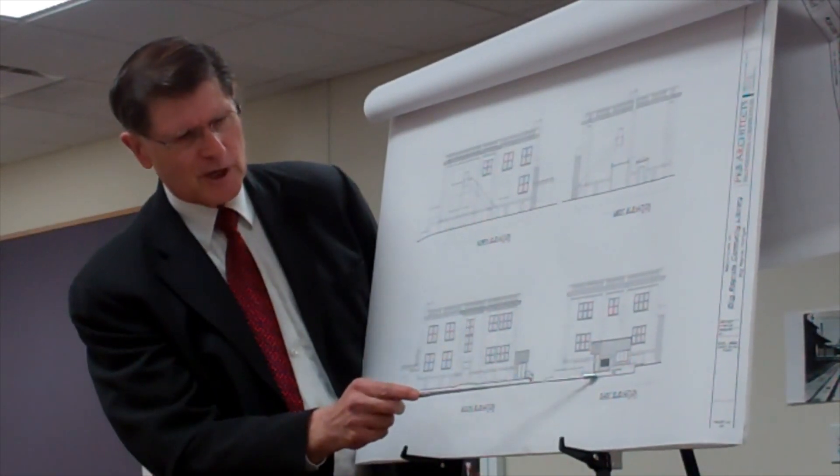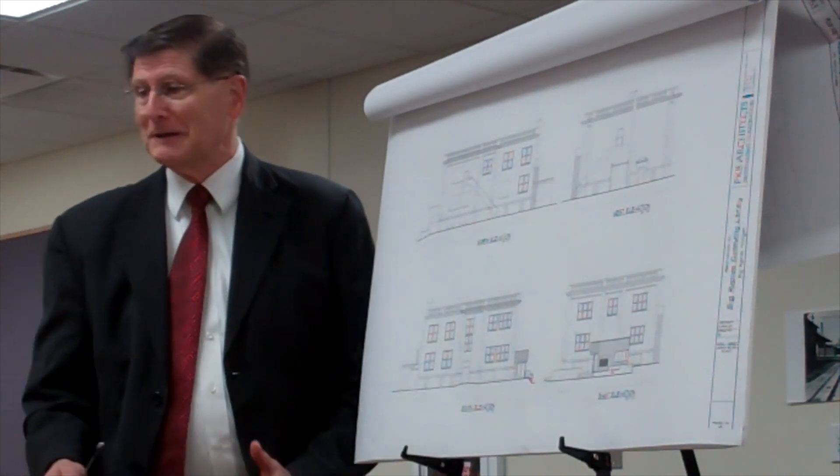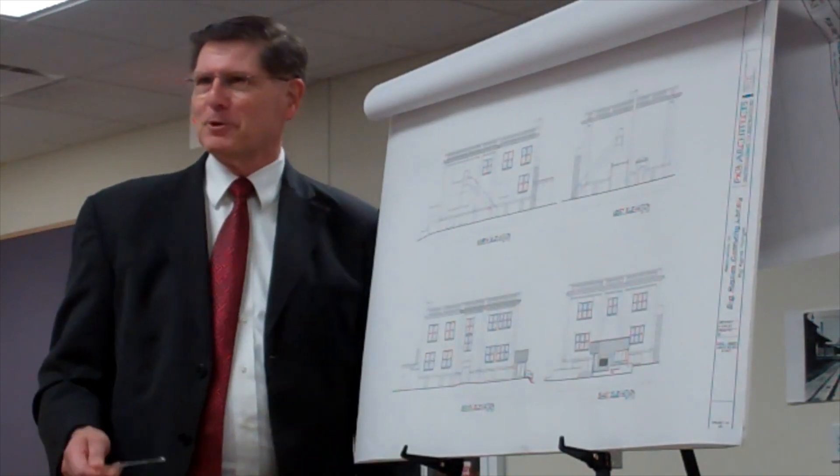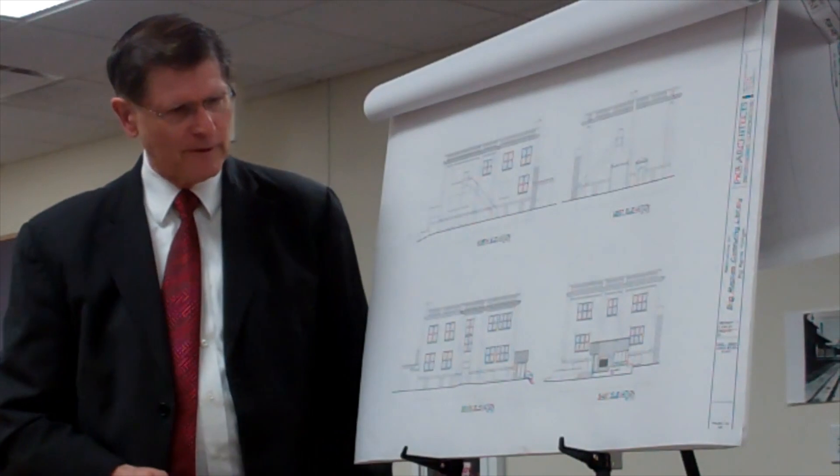The main entry is facing east. We put a little canopy addition here and a little three foot addition on, which allows us to do an enclosed book drop area and cart space for that.